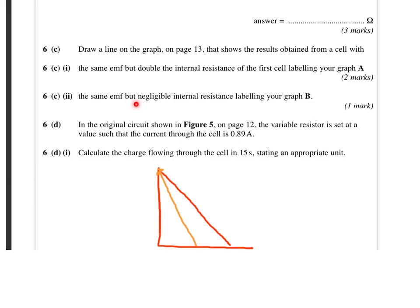The second one says, the same EMF, but negligible internal resistance. Well, if it's got the same EMF and negligible internal resistance, then again, we're going to start at the same point. But of course, if there's no resistance, no internal resistance, then no potential difference is going to be dropped across the internal resistor. So no matter what the current is, the terminal PD is going to be the same. So it's a straight horizontal line.